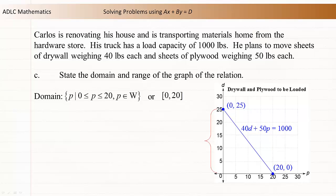The range, d, includes the values from 0 to 25 inclusive. Using set builder notation, the range is the set of all d such that d is greater than or equal to 0 and less than or equal to 25, where d is an element of the whole numbers.